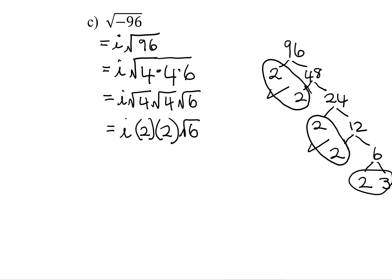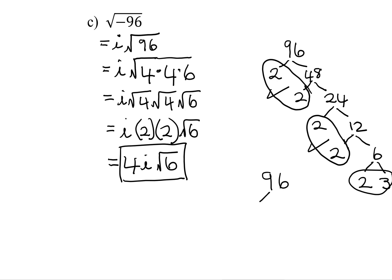So 2 times 2 is 4, giving us 4i times the square root of 6. That's our simplified answer. This would have been more efficient if we'd recognized that 96 is 16 times 6 right away. Then we'd simply say the square root of 16 is 4, the square root of 6 can't be simplified, giving 4i times the square root of 6. As noted, 96 has many different ways of factoring, but you always end up with the same answer.